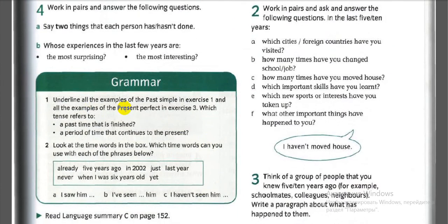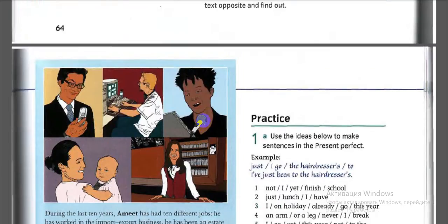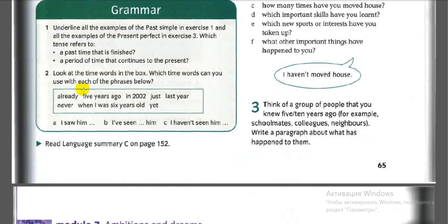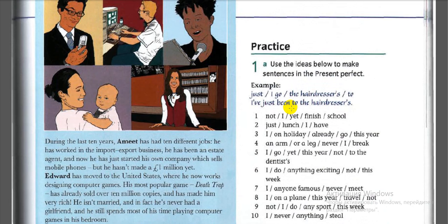Grammar: underline all examples of the past simple and present perfect. Now look at the time words in the box — translate them and write them in your vocabulary copybook. The time words are: already, five years ago, in 2002, just, last year, never, when I was six years old, yet.